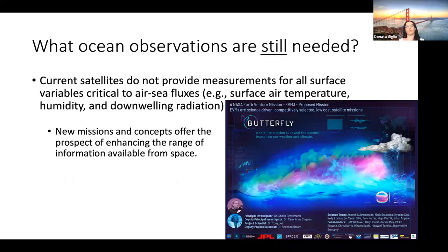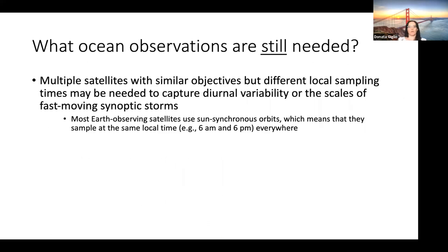We also want to think about new mission concepts to enhance the range of information available from space. Current satellites do not provide measurements for all the surface variables needed to estimate air-sea fluxes, and I mentioned many times how important simultaneous measurements of the ocean and the atmosphere are for a better description of air-sea fluxes. Concepts like the butterfly concept are proposed to advance in this direction. Most satellites measure only a couple of times per day at any fixed location, and we want instead multiple satellites with similar objectives that measure at one location at different times of day so that we can describe diurnal variability and the scales of fast-moving synoptic storms.